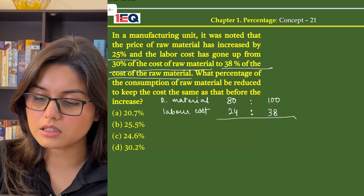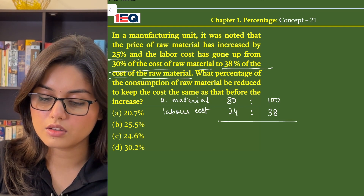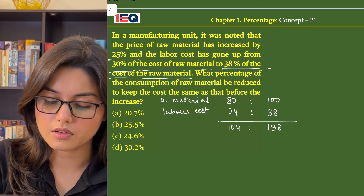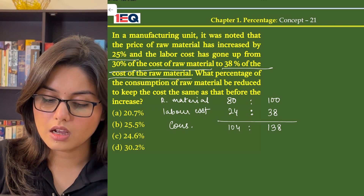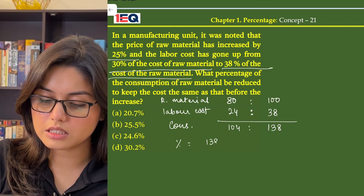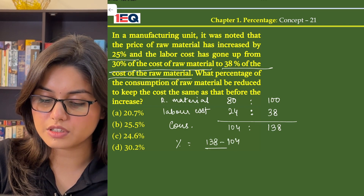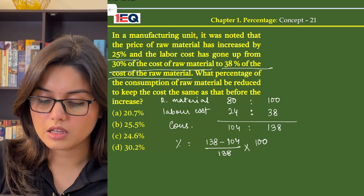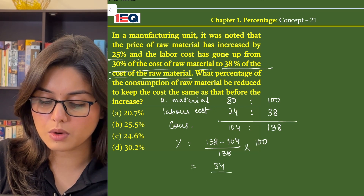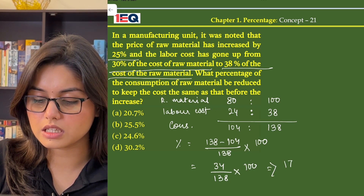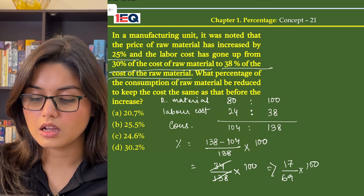Now, from here we'll get our consumption. So, consumption is equal to 104 is to 138. The required percentage is equal to 138 minus 104 divided by 138 multiplied by 100. This gives us 34 by 138 in 100, and from here we get 17 by 69 multiplied by 100, on dividing by 2.